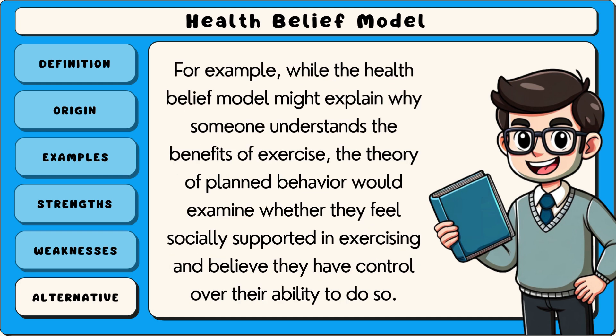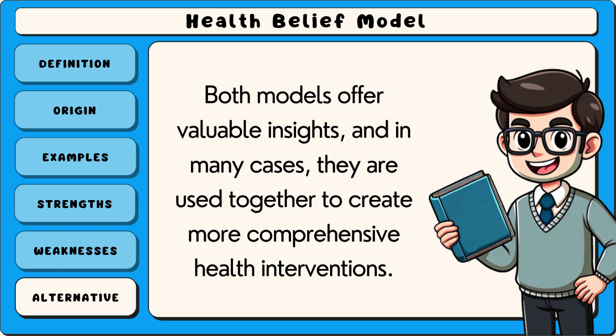For example, while the health belief model might explain why someone understands the benefits of exercise, the theory of planned behaviour would examine whether they feel socially supported in exercising and believe they have control over their ability to do so. Both models offer valuable insights and in many cases, they are used together to create more comprehensive health interventions.